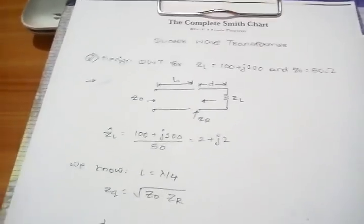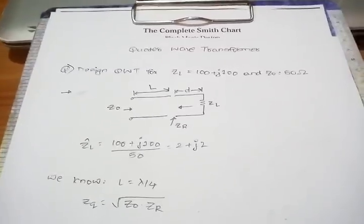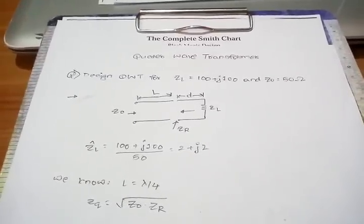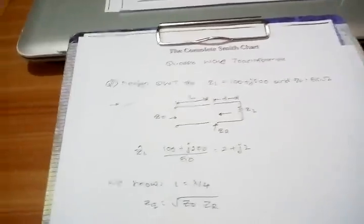As the name suggests quarter wave, the length of the transmission line is lambda by 4. How to design? Let's take an example.